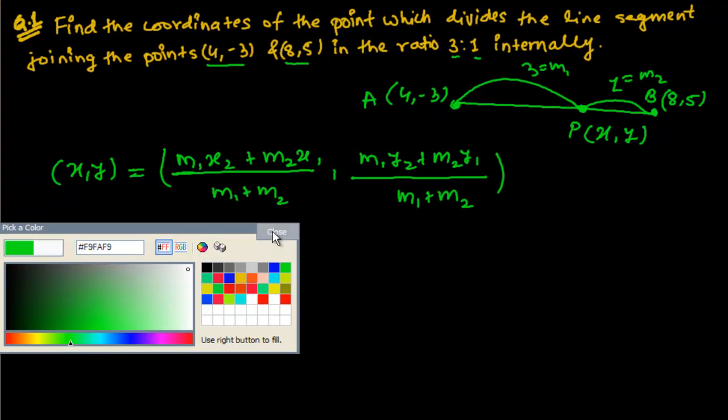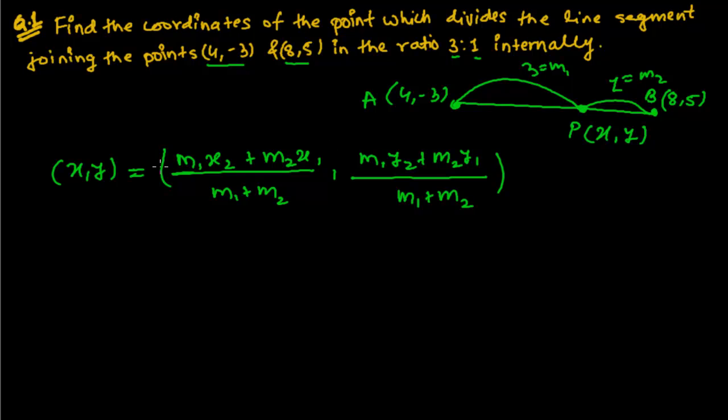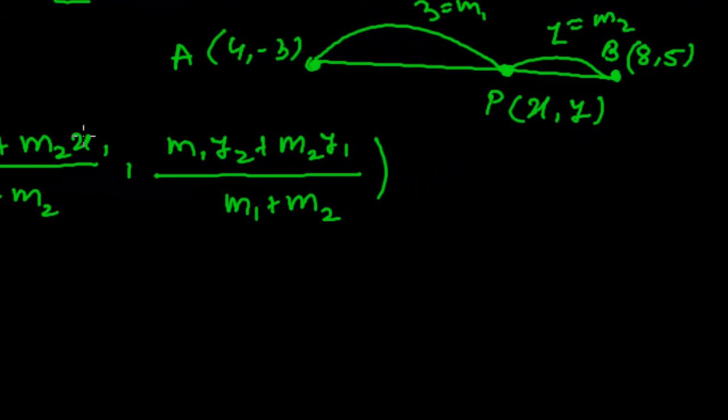We have to find the value of this (x, y) now. X1 and X2 are also given. This is actually X1 and Y1, and this is X2 and Y2. If we put the value of all M1, M2, X1, Y1, X2, Y2 in this formula, we will get the value of this P point.